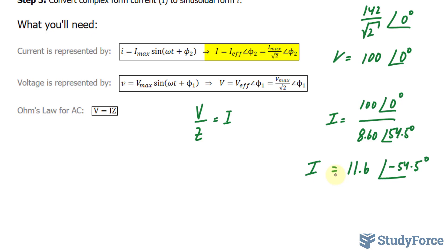Effective current equals I_max over the square root of 2. Let me write that down. Effective current, represented by I_eff, is equal to I_max divided by the square root of 2.